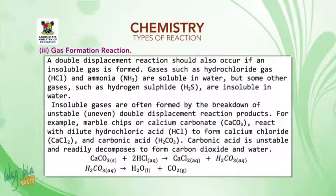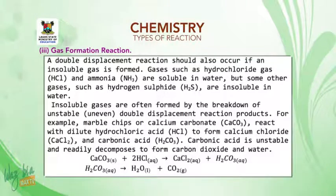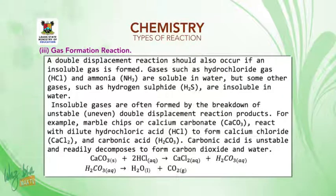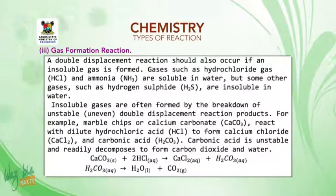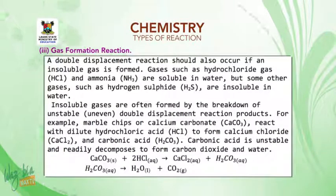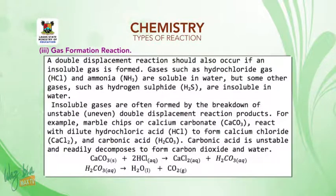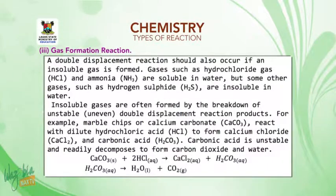The third type: gas formation reaction. A double displacement reaction occurs if an insoluble gas is formed. Gases such as hydrogen chloride and ammonia are soluble in water, but some gases such as hydrogen sulfide are insoluble. Insoluble gases are often formed by breakdown of unstable double displacement reaction products. For example, marble chips (calcium carbonate) react with dilute hydrochloric acid to form calcium chloride and carbonic acid; carbonic acid is unstable and readily decomposes to form carbon dioxide and water.